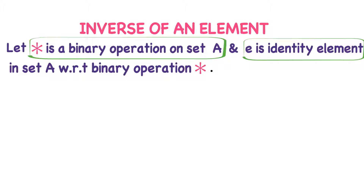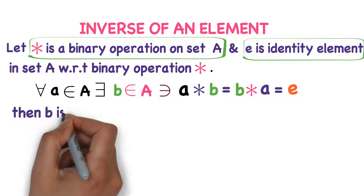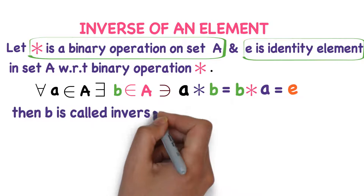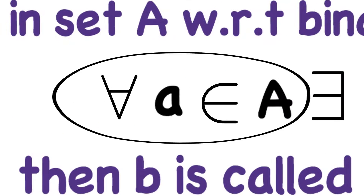To find the inverse of an element: for any A in set A, there exists an element B in the same set A such that A star B equals B star A equals E, where E is the identity element. Then B is called the inverse of element A with respect to binary operation star.